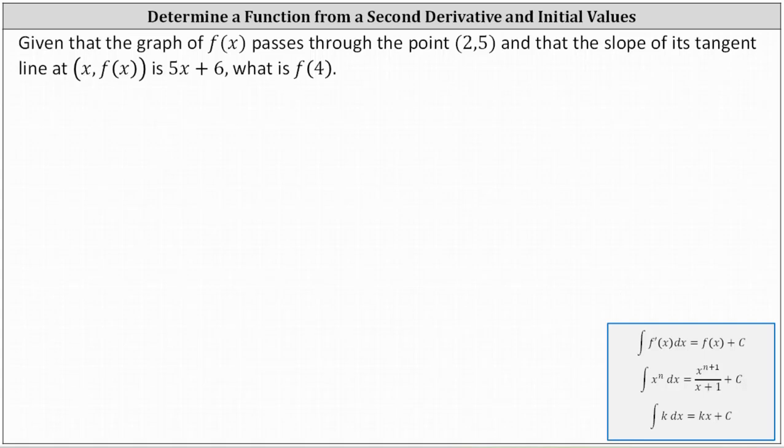Given that the graph of f of x passes through the point (2, 5) and that the slope of its tangent line at (x, f(x)) is 5x plus 6, what is f(4)?